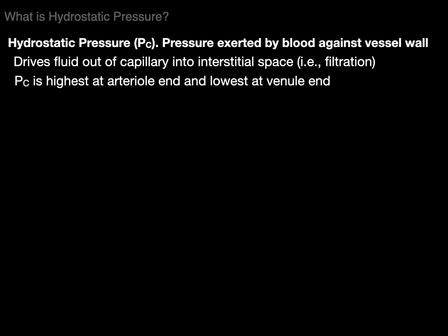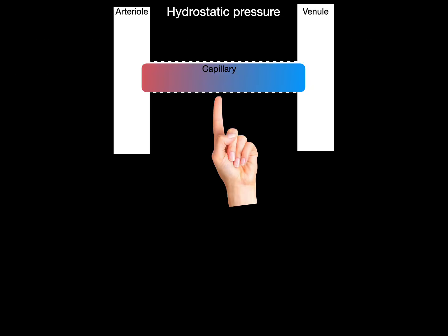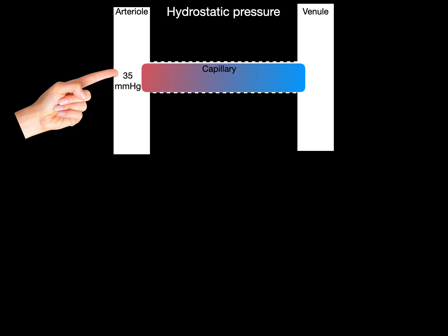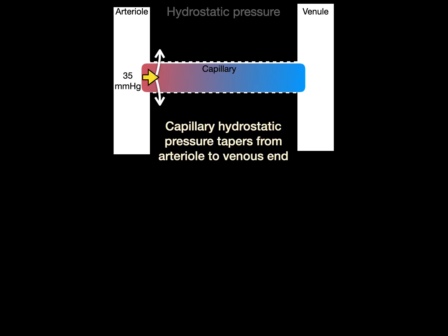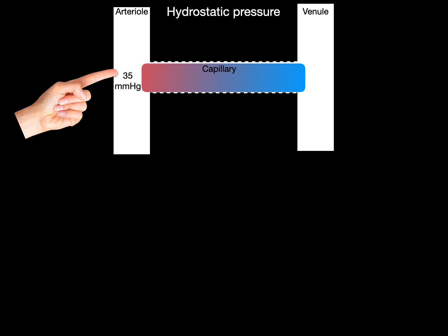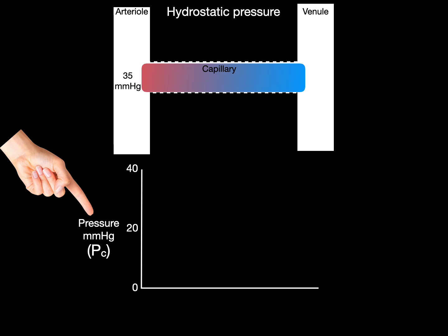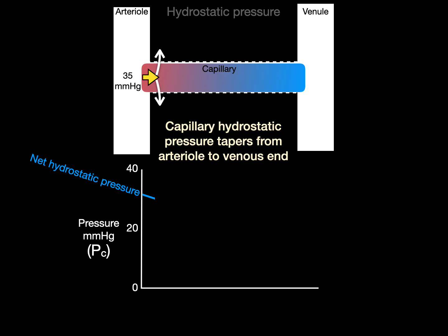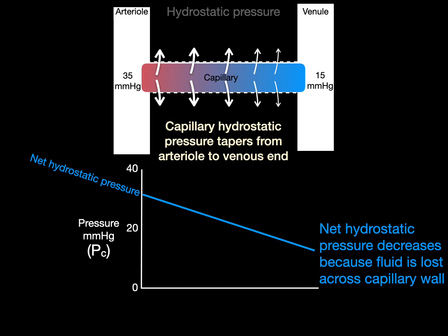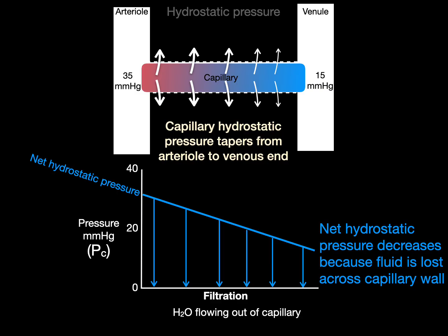Hydrostatic pressure is highest at the arterial end and lowest at the venule end of a capillary. The arterial end begins with 35 to 40 millimeters of mercury pressure, and capillary hydrostatic pressure tapers from the arterial to the venous end — from 35 down to about 15 millimeters of mercury. On a graph with pressure in millimeters of mercury on the y-axis, net hydrostatic pressure in blue continually declines from arterial to venous end, as fluid is lost across the capillary wall.